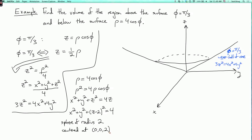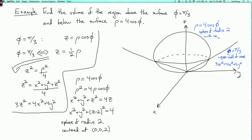So this is a sphere of radius 2 centered at the point (0, 0, 2). This is analogous to something we saw a very long time ago when we wrote certain circles in polar coordinates. So our other surface, ρ equals 4 cosine φ, is a sphere of radius 2 with center (0, 0, 2). We didn't actually need to do this to solve the problem, but it's nice to know what surfaces we're dealing with.